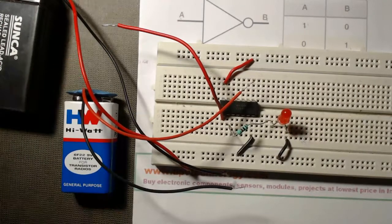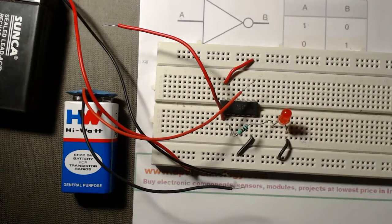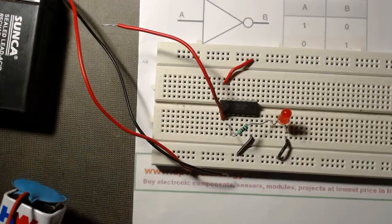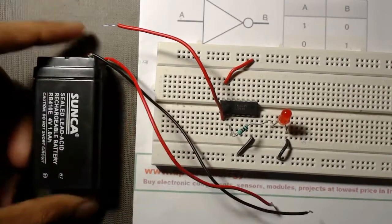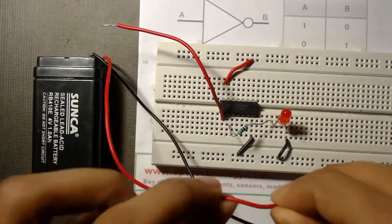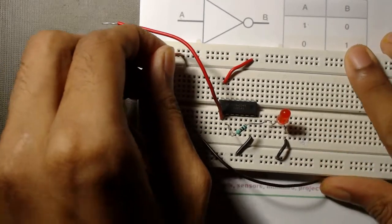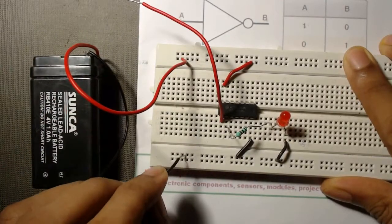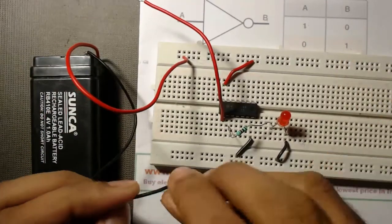So we have to first convert this 9 volt to lower volt. If you don't know how to convert that, you can watch our video. The link of that video is given in the description of this video. Now we have to connect the positive terminal of this battery to our VCC row, and negative terminal to this ground row.